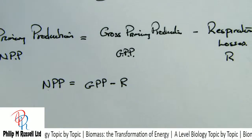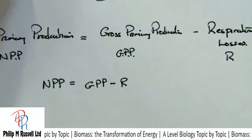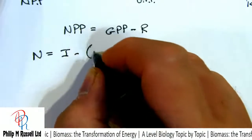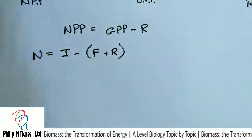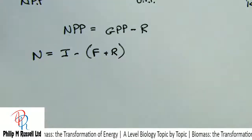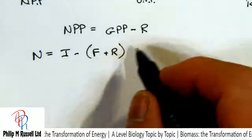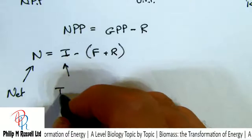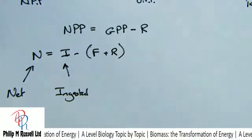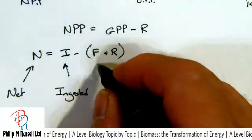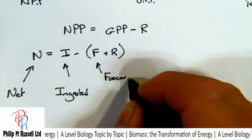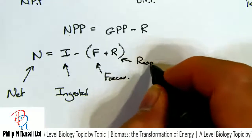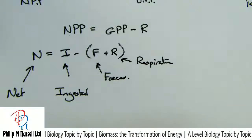We can look at this slightly differently with another formula: N = I − F + R. What we've got here is net production (N), I is the amount of energy ingested, F is the stuff that never makes it into the body — faeces, urine, all that sort of stuff that's lost — and R is respiration. This is probably a better formula for trying to work out what's going on.